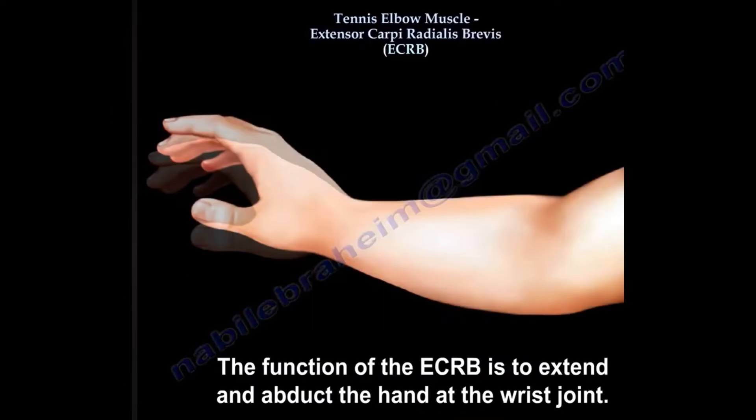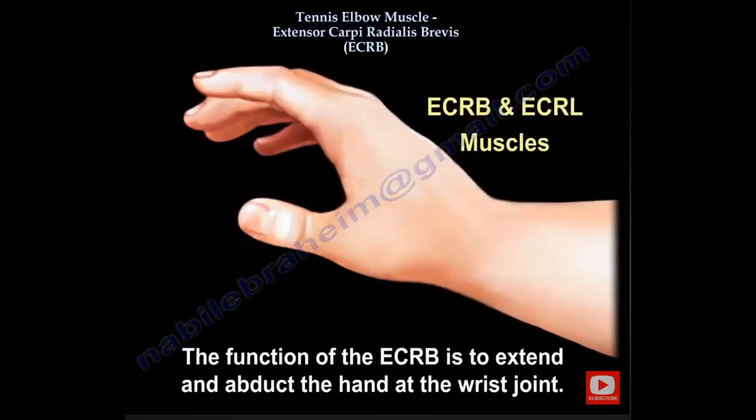The function of this muscle is to extend and abduct the hand at the wrist joint. There is another muscle that helps in that function, called the extensor carpi radialis longus. It is a longer muscle.